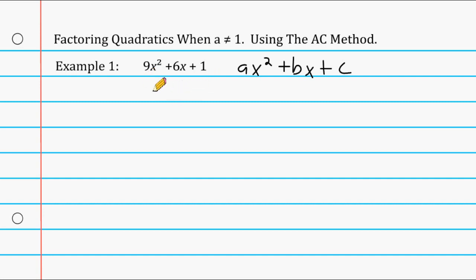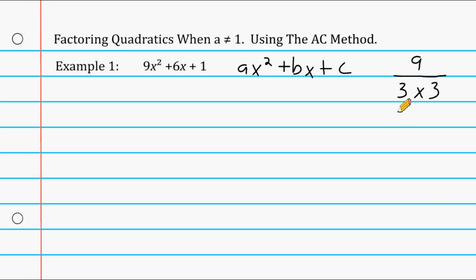We start by multiplying 9 times 1, which is 9. Once you multiply the a and c terms together, you have to come up with two factors of that number that when multiplied make that number and when added give you the b term. We know that 3 times 3 is 9, and 3 plus 3 equals 6, which is our b term.